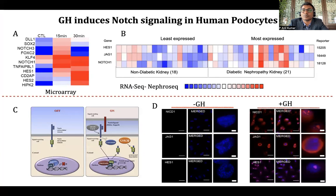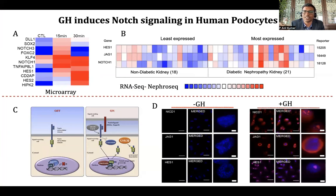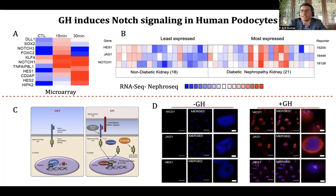The Notch pathway is normally switched off in adult podocytes. In the Notch signaling mechanism, signal-sending cells come in contact with signal-receiving cells; the ligand on the signal-sending cell interacts with the Notch receptor on the signal-receiving cell, causing a conformational change. The receptor's intracellular domain is cleaved from the Notch portion — this Notch intracellular domain, popularly known as NICD — enters the nucleus, binds to cognate sites on the DNA, and acts as a transcription factor. Since we observed activation of Notch components in the microarray and in diabetic nephropathy kidney specimens, we performed immunostaining for NICD1, JAG1, and its downstream target HES1. Clearly, in growth hormone-treated samples, we could see upregulation of all three.